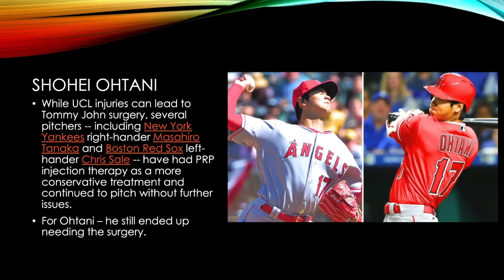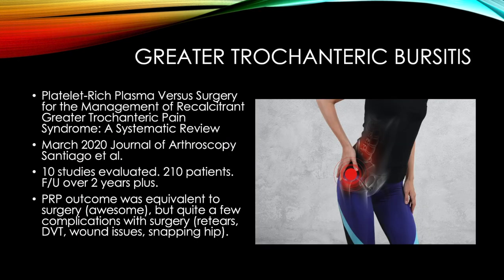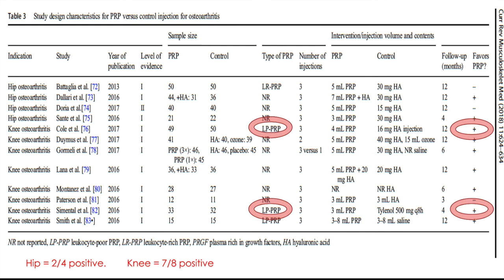For greater trochanteric bursitis, a meta-analysis of 10 studies with over 200 patients showed that PRP therapies did really well — equivalent to surgery — but without the complication rates such as retears, blood clots, wound issues, or snapping hip. So it's better to try PRP therapy first.